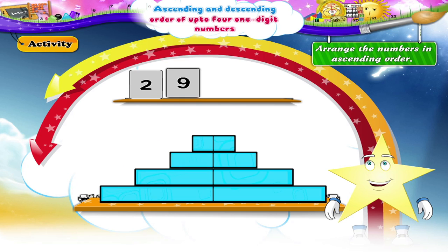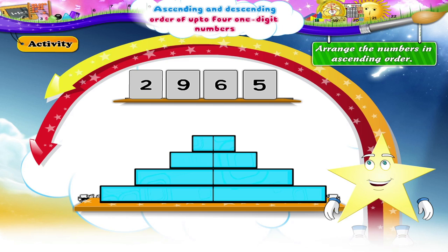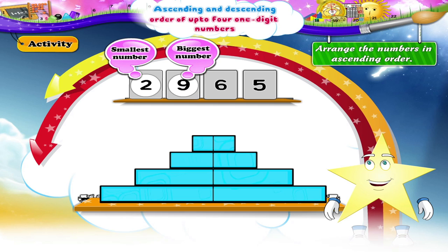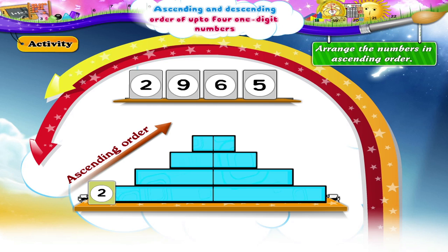Two, nine, six, five. What do you think is the smallest number, Starry? Yes, the smallest number is two. And the biggest number is nine. So, between six and five, five is the smaller number. The numbers in ascending order are two, five, six, nine.